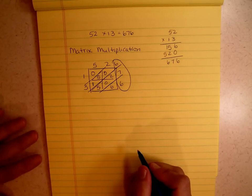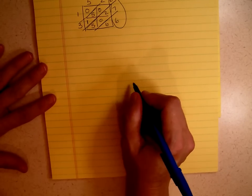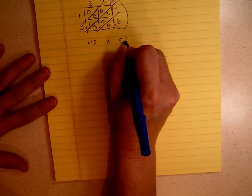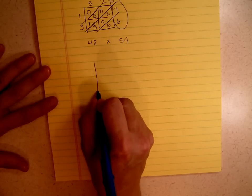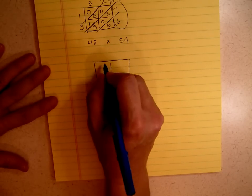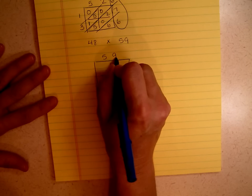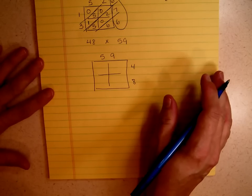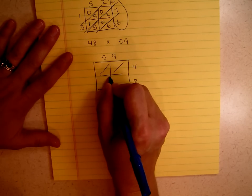Pretty cool, huh? Now, let's try another one. Let's multiply 48 times 59. Again, we're going to build ourselves a 2 by 2 matrix. We're going to say 59. And this time I'm going to write the 48 here, just to do something different. It doesn't matter which side you're writing on. Remember to split every box in half.